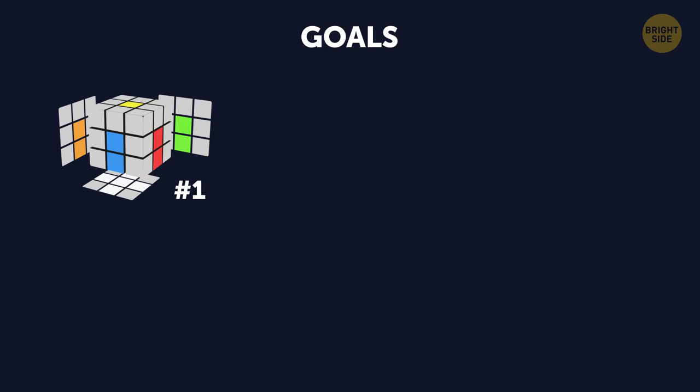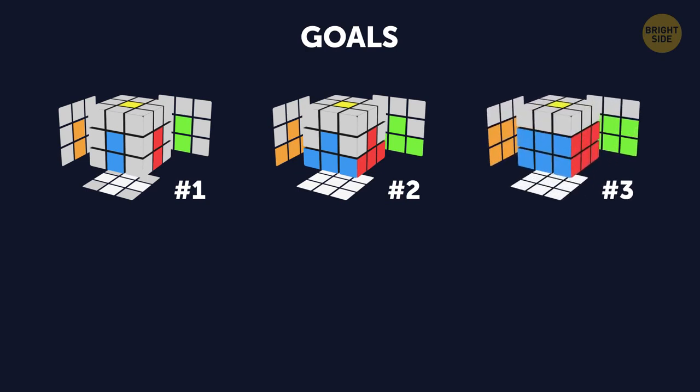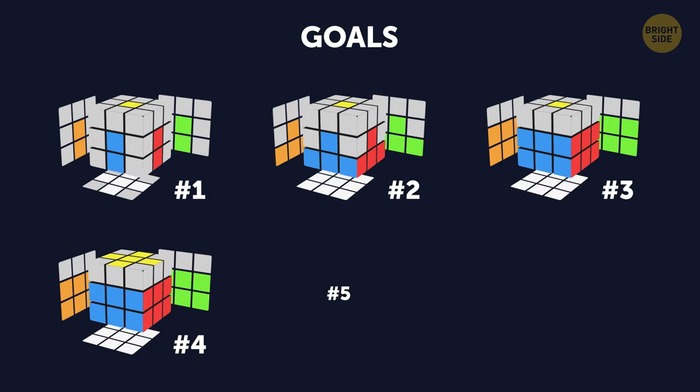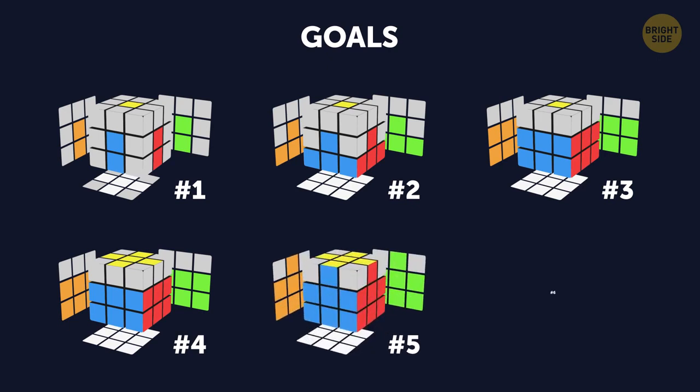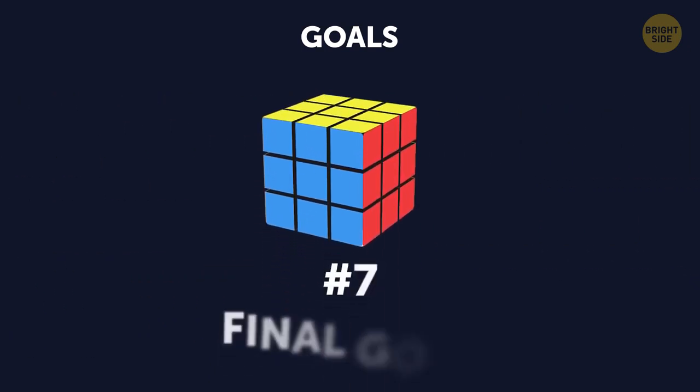Number 1, white cross on the bottom. Number 2, the bottom corners. Number 3, the middle layer. Number 4, the yellow cross. Number 5, the top layer. Number 6, the top corners. Number 7, the final goal.